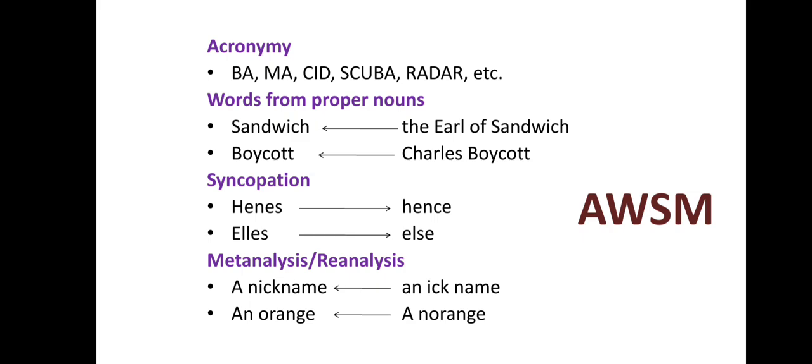The next one is Words from Proper Nouns. Many words in English have been derived from names of persons or places through regular usage. For example, the term 'sandwich' is derived from the Earl of Sandwich, and the word 'boycott' is derived from Captain Boycott. So this process is called Words from Proper Nouns.